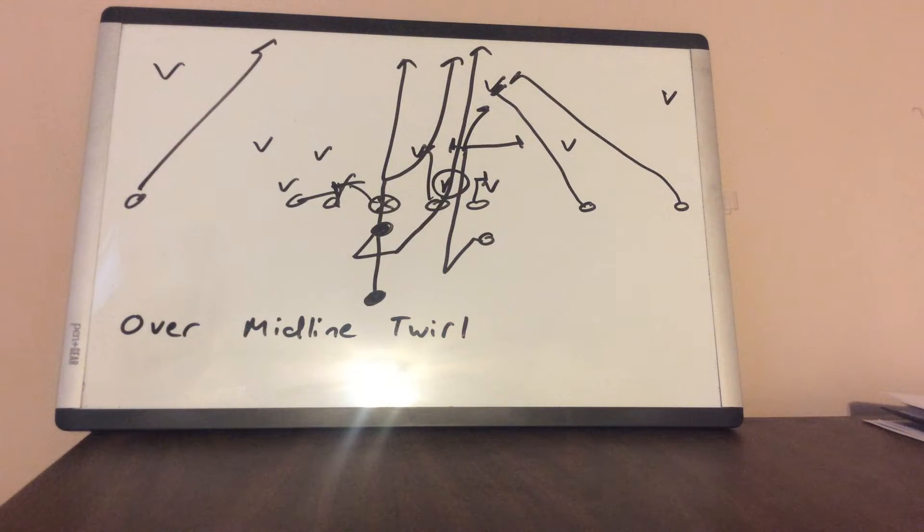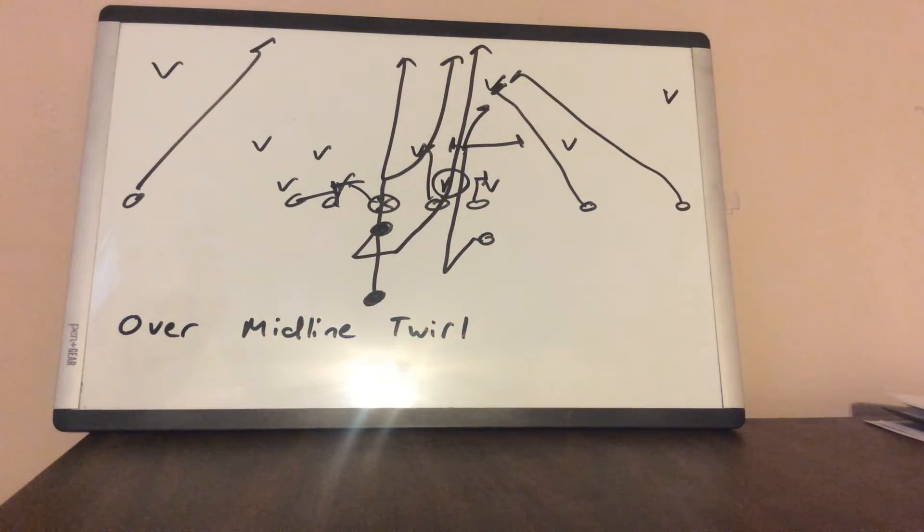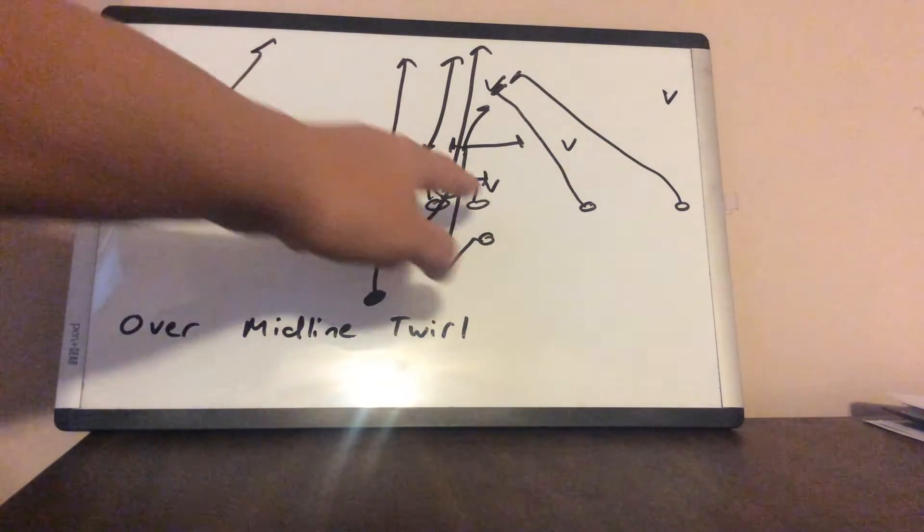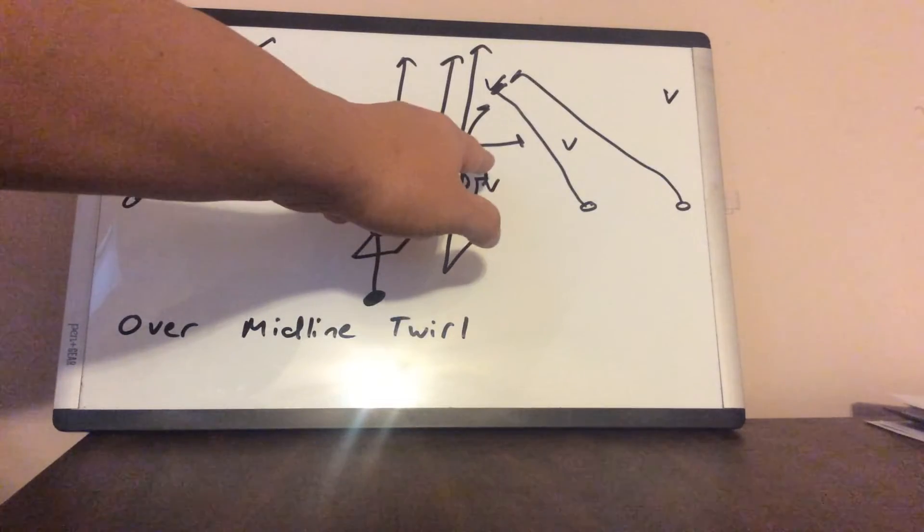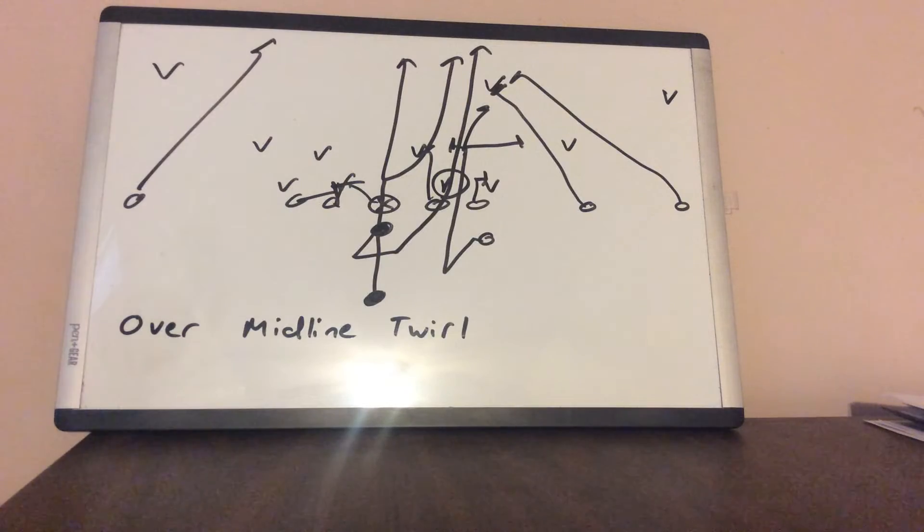The tackle is going to fan the first person outside the read. He's going to step with his inside foot, get his heels past his heels, turn his belly button to the sideline, strike with his right hand and horizontally remove that player.